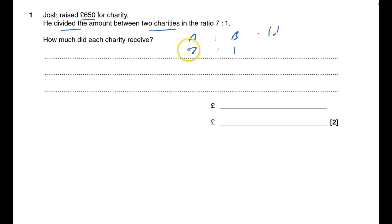I always like including a total column as well. Don't always need it. 7 to 1, the total is 8. And it says here £650 is raised and that's the total amount, so that will go in the total column.